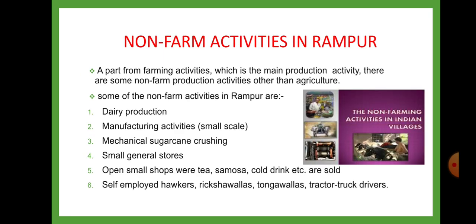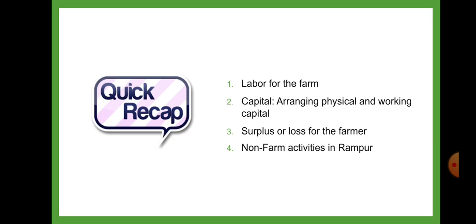Non-farm activities in Rampur: Other than farming activities, the activities which are carried on are called non-farm activities. Apart from farming, which is the main production activity, there are some non-farm production activities. Some of these in Rampur are dairy production (milk production), manufacturing activities in small-scale industries, mechanical sugar cane crushing, small general stores, shops where tea, samosa, cold drinks, etc. are sold, self-employed hawkers, rickshaw wallas, tonga wallas, tractor and truck drivers, etc.